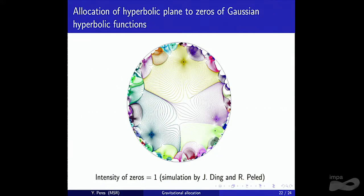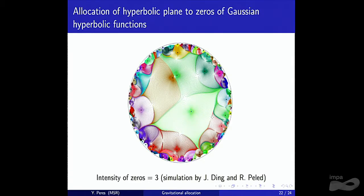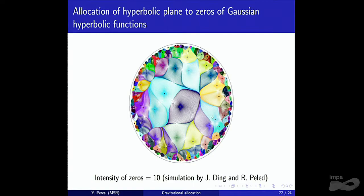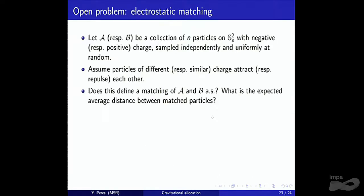Here are some pictures of gravitational allocation in the hyperbolic plane, from work in preparation by Jan Ding and Ron Peled. To end, let me recall the open conjectures: the electrostatic matching is the most attractive target to analyze but looks hard. There is also the greedy matching, both online and offline, which seems like it should be easier but we don't know how to analyze it either. Thank you.